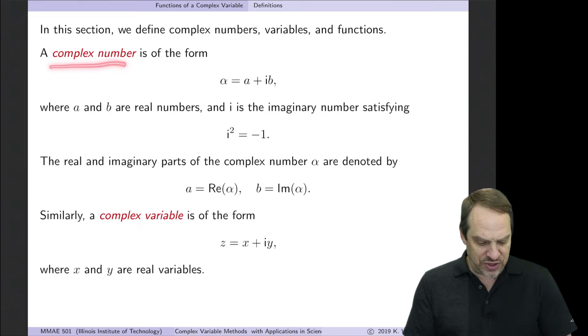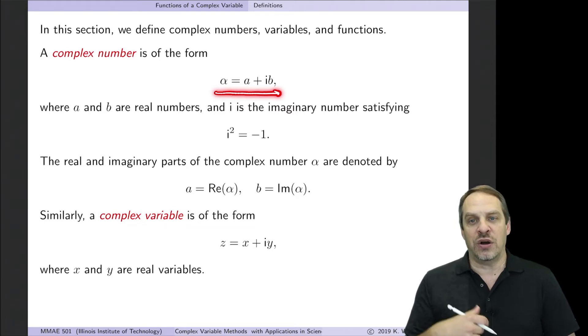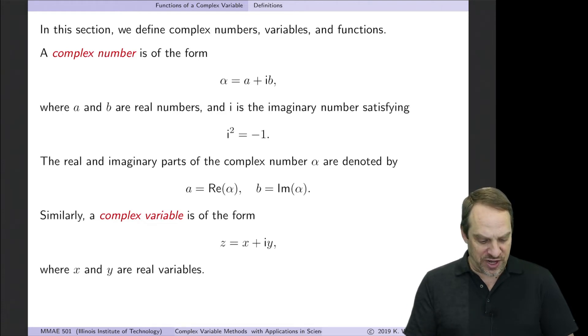So a complex number is simply of this form. So say alpha is a complex number. It's A plus IB. So A and B are real numbers. And A is the real part of our complex number, alpha. And B, which itself is real, is the imaginary part of our complex number. I is such that I squared is equal to minus one. So I is the square root of minus one. The notation we use that A is the real part of alpha, or RE of alpha. And B is the imaginary part of alpha, or IM of alpha.